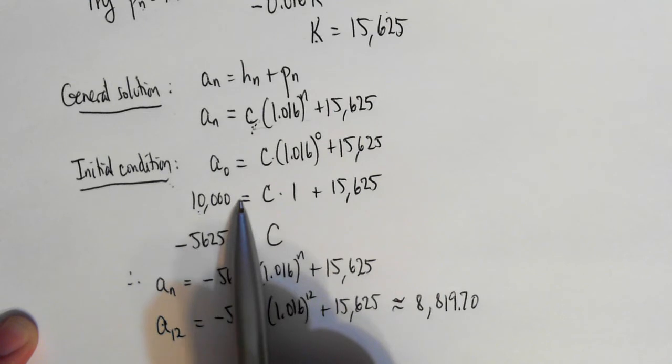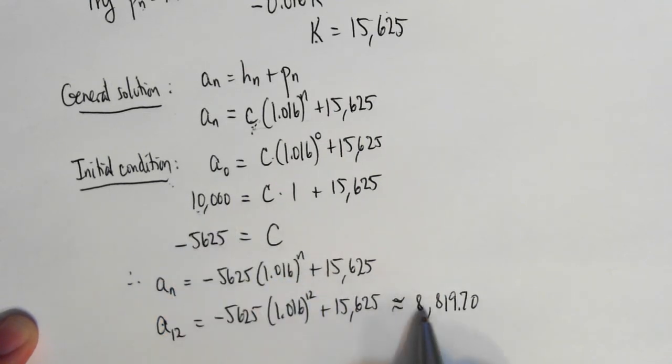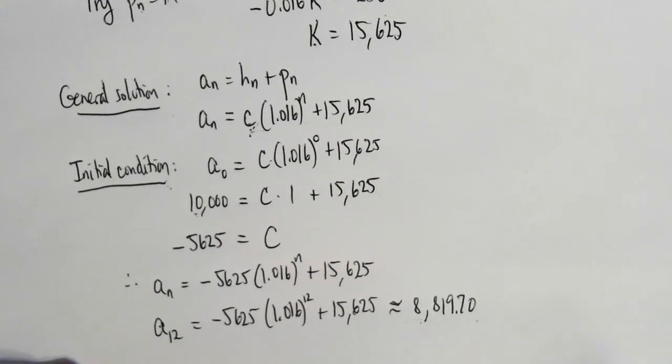So the car loan was initially for $10,000. After one year of payments, the principal has been reduced to about $8,800. Now notice something. Now the problem is done, so we can stop here. I want to point out something here, which is kind of important for any kind of loan that you might take in the future.